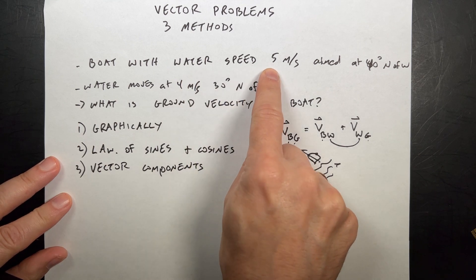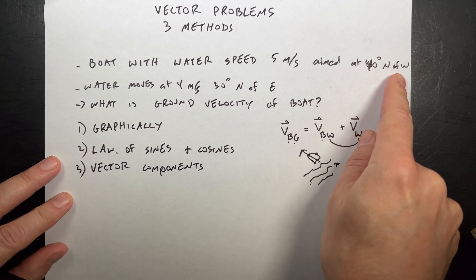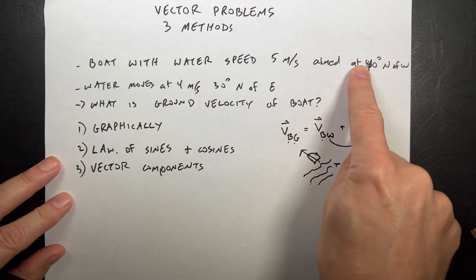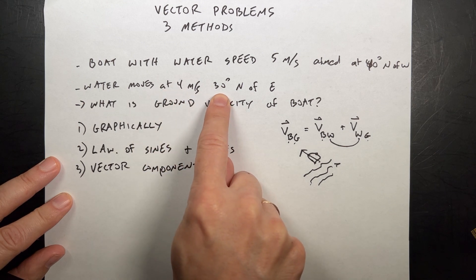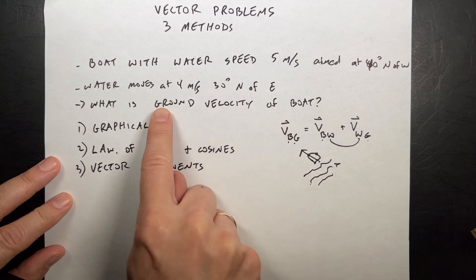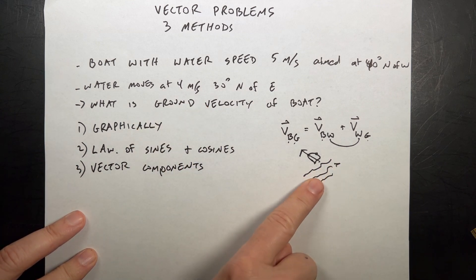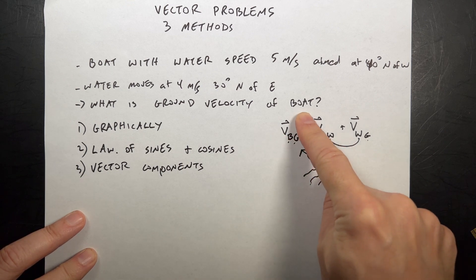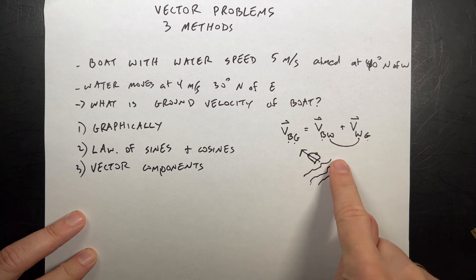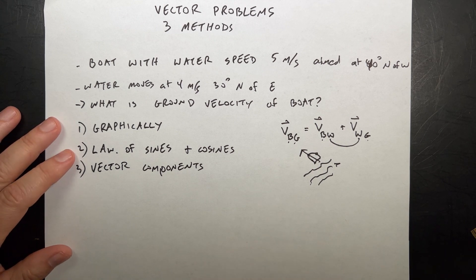So here I have a boat with a water speed of 5 meters per second at 40 degrees north of west. And the water moves at 4 meters per second, 30 degrees north of east. So what's the velocity of the boat with respect to the ground? Imagine what's going on here — I have water flowing this way but the boat's driving this way. This is a relative velocity problem.